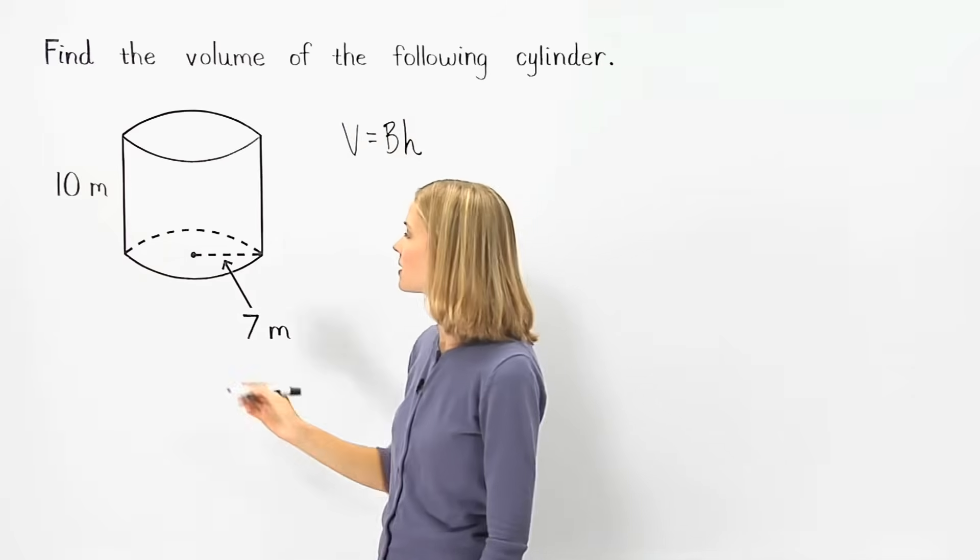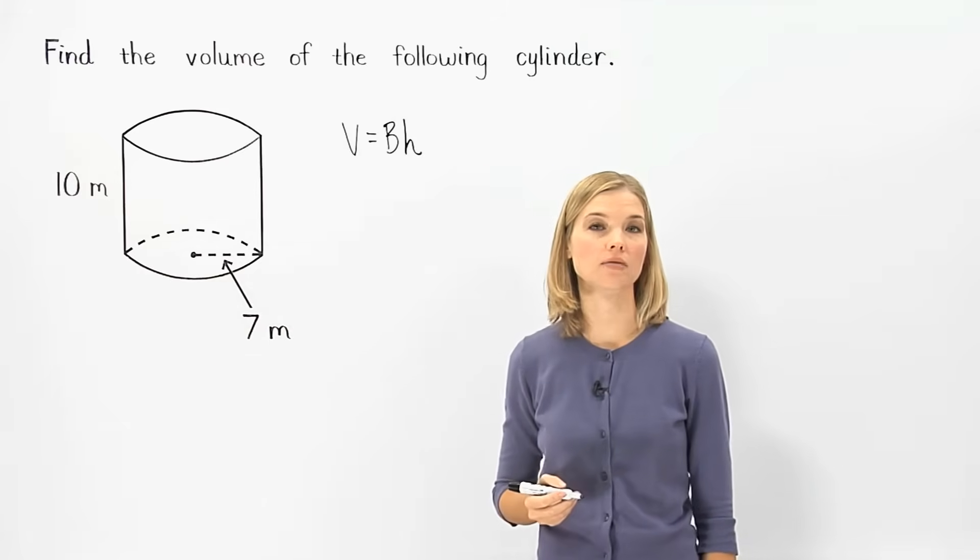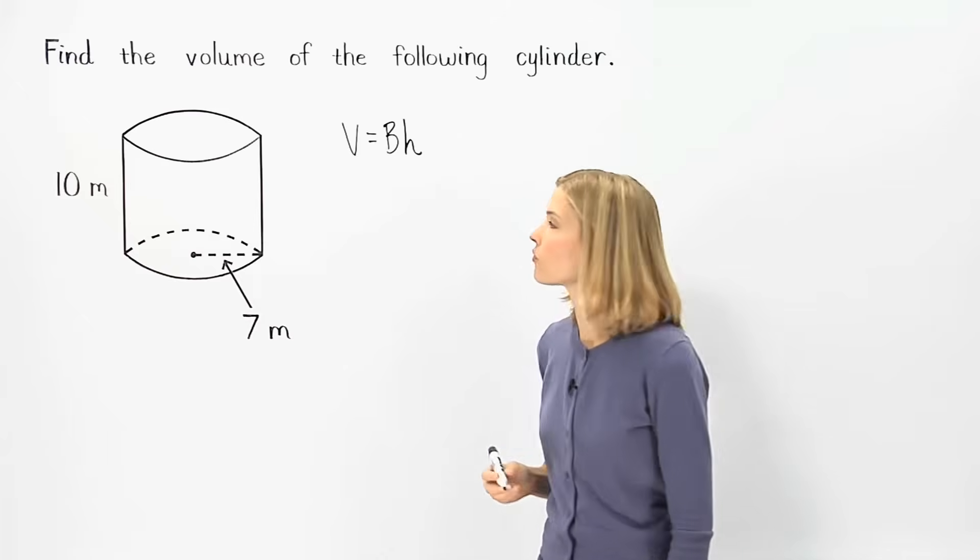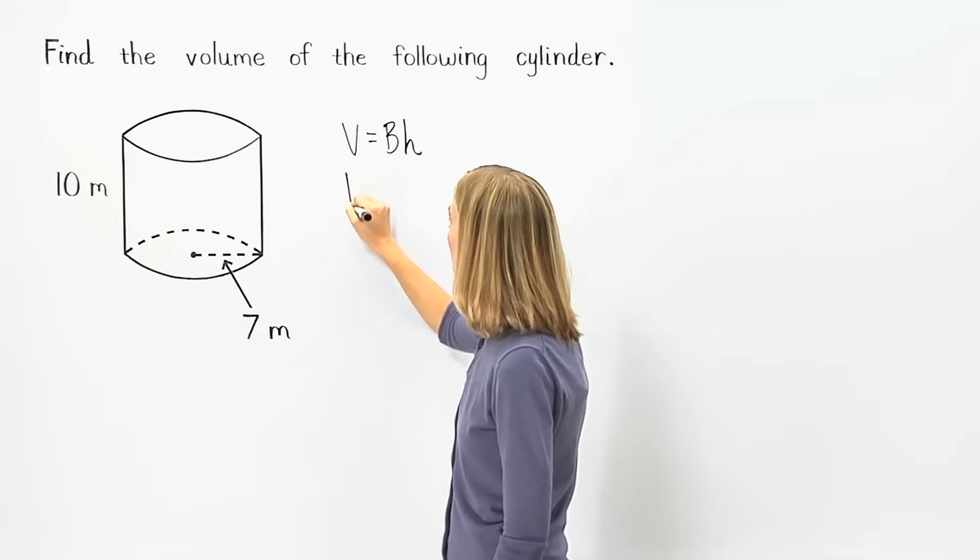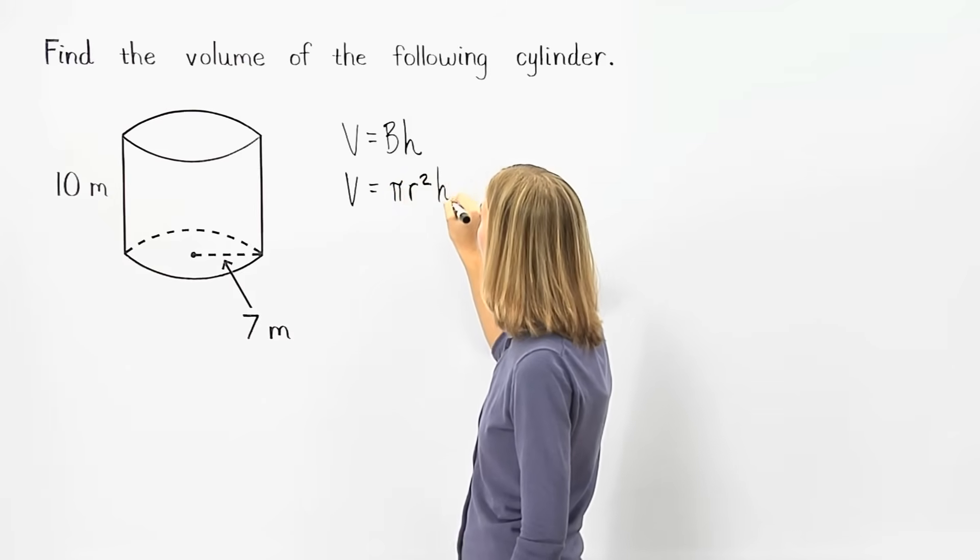Notice, however, that the base of a cylinder is a circle, and remember that the formula for the area of a circle is pi times radius squared. So, the formula for the volume of a cylinder can be written as pi times radius squared times height.